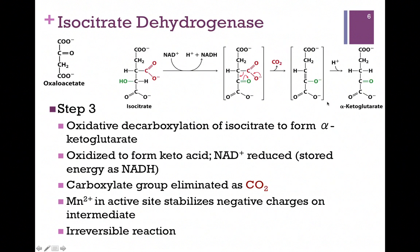As you can see, the two intermediates in brackets carry several negative charges, and those are stabilized by a manganese ion in the active site of the enzyme. So this is a good example of metal ion catalysis. The one-way arrows indicate this is an irreversible reaction.